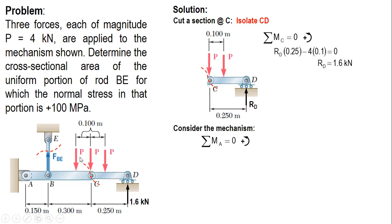Let's sum up moment about A. FBE is counterclockwise (positive), RD at 1.6 is positive counterclockwise, while the three forces are all clockwise moment. For FBE, the perpendicular distance is 0.15. For RD, the perpendicular distance is 0.15 plus 0.45 plus 0.3 plus 0.25.